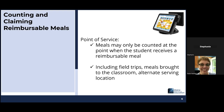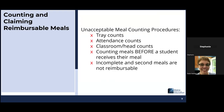Point of service means that meals can only be counted at the point when a student receives a reimbursable meal. This includes field trips and meals brought to the classroom in alternate serving locations. Now let's talk about some unacceptable meal counting procedures. The first one is tray counts — counting trays before meal service and subtracting leftovers. This seems easy, but trays could have gone to adults, there could be a dropped tray, or some students may not have taken reimbursable meals.